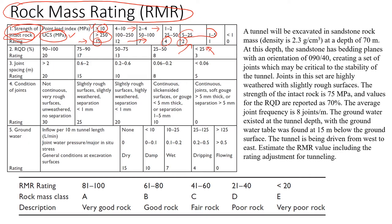The next factor is RQD — I have a video on how to estimate RQD, please watch that one. If we have high values of RQD, meaning not many joints in the rock mass, we're going to have a relatively high rating of maximum 20. When RQD goes below 25, we're going to have a very small rating. The idea is that the better the properties, the higher the rating.